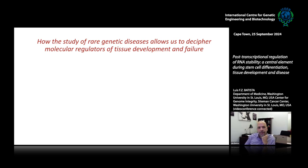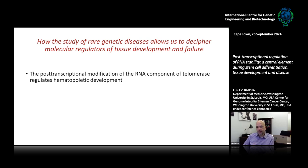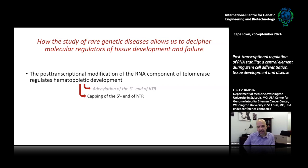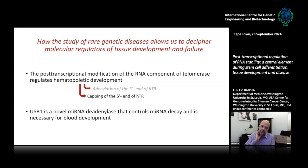I'm going to tell you two stories today. Some of this has been recently published, some is unpublished and we're about to submit. The first story is about how the post-transcriptional modification of the RNA component of telomerase regulates hematopoietic development. We'll focus first on the adenylation of the three prime ends of the telomerase RNA component, called HTR, then on the capping that happens on the five prime ends of HTR. In the second half I'll tell you how we discovered that USB1 is a novel microRNA diadenylase that controls microRNA decay and is essential for blood development.